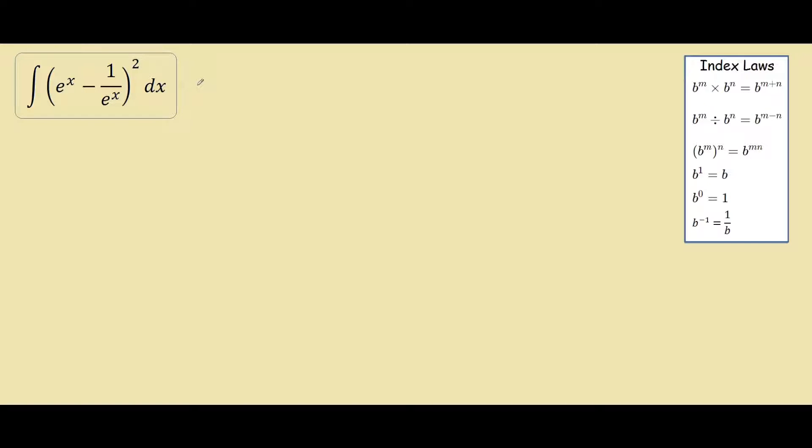So our first step will be to expand it out so we can get rid of the brackets. So we have e^x minus 1/e^x times e^x minus 1/e^x dx.